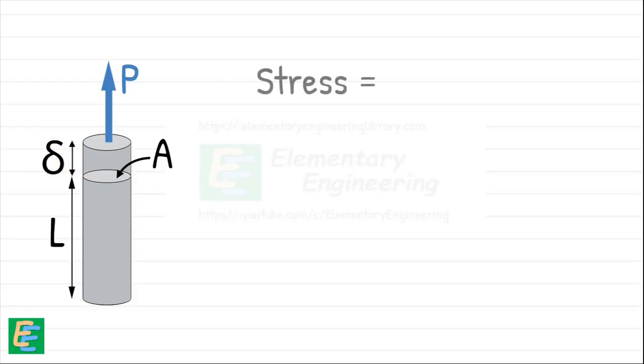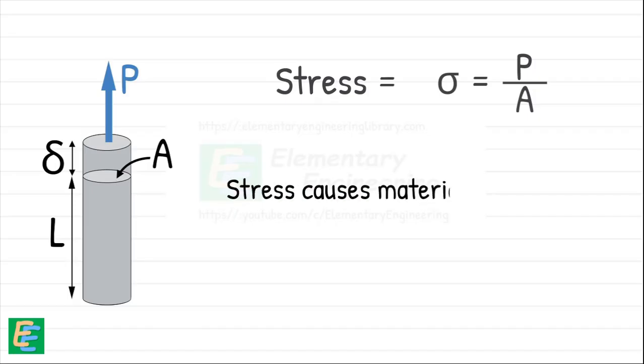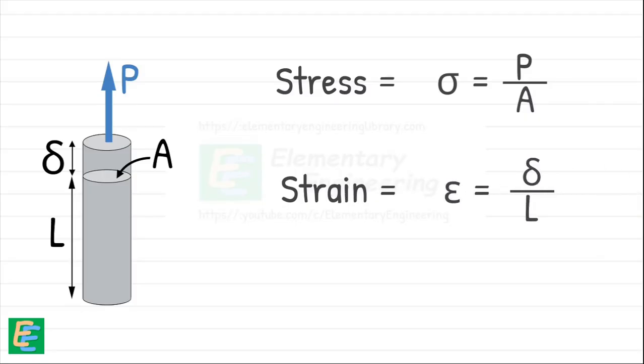We begin with the stress generated in the body because of the applied force and which is given as the axial force over the cross-sectional area over which it is acting. This stress causes the material to deform. And the amount of deformation relative to its original length is called strain, which we write as this. We have discussed all these in detail in our previous video. You can check that out after this one.